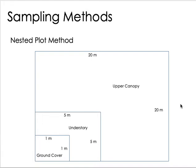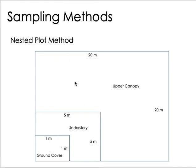In the nested plot method, within a 20x20-meter plot, you include other plant species classified as understory and ground cover. Large trees belong to the upper canopy layer and require the full 20x20 plot — 10x10 would be too small. At each belt transect point, you establish a nested plot: 20x20 for large trees, 5x5 for understory, and 1x1 for ground cover, with understory and ground cover plots placed inside the 20x20.